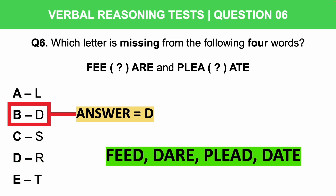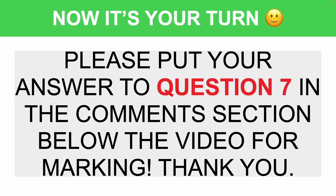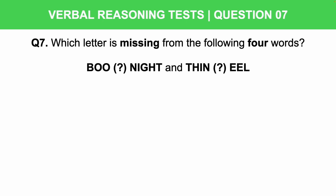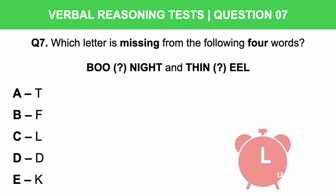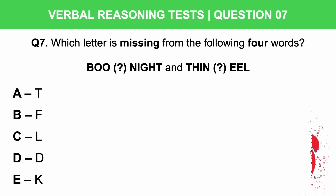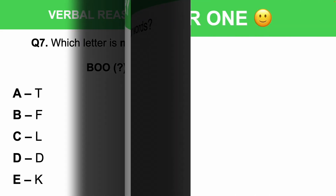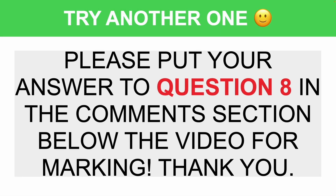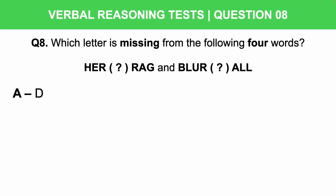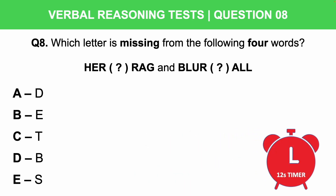Now it's your turn. Please put your answer to question 7 in the comment section below for marking. Question 7: which letter is missing from the following 4 words? The potential letters are T, F, L, D, or K. You have 12 seconds. Then try question 8: which letter is missing from the following 4 words? Options: A, E, T, B, or S. 12 seconds starting now.